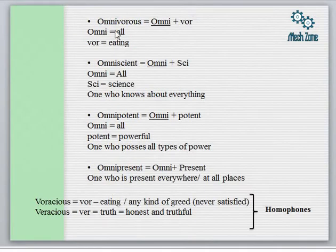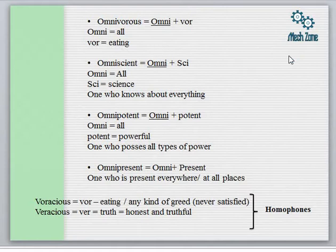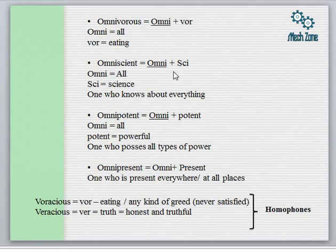We have 'omnivorous' — the root word 'omni' means all, and 'vor' means eating or the tendency to eat. So omnivorous means something or someone that can eat everything — species which consume both plants and animals, such as bear and frog. Next is 'omniscient.' Omni means all and 'sci' is the root word related to knowledge, so omniscient means one who knows about everything.